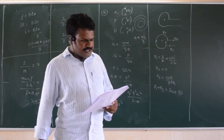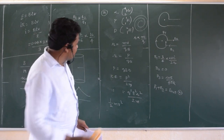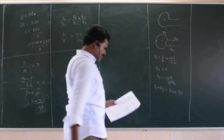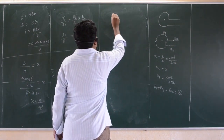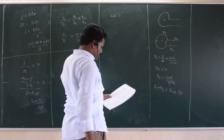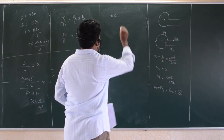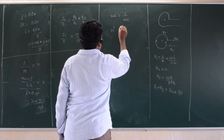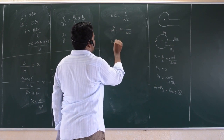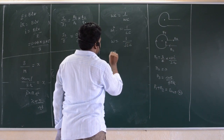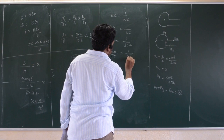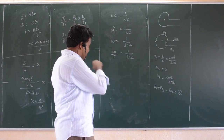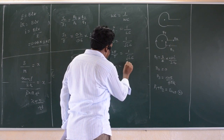In the given circuit, the resonance frequency is possible when omega L equals 1 by omega C. Then omega-squared is equal to 1 by LC, and omega equals 1 by root LC. So 2 pi N equals 1 by root LC. L and C are given — just substitute to get the frequency.